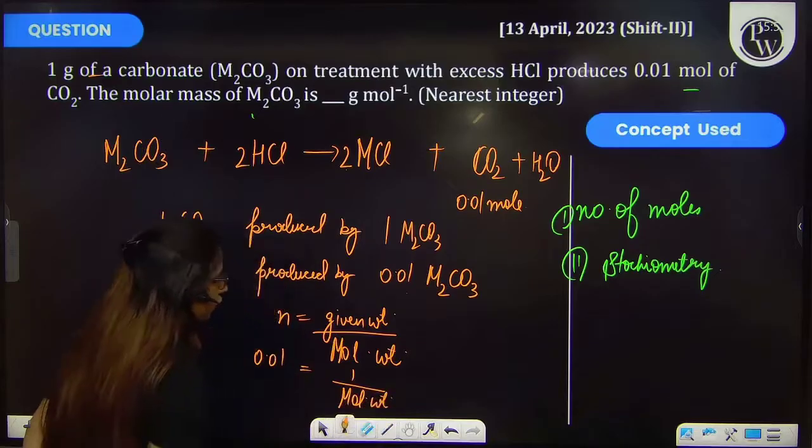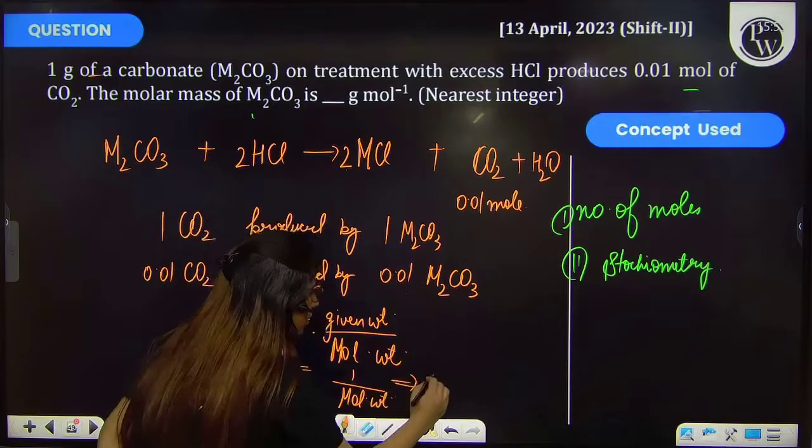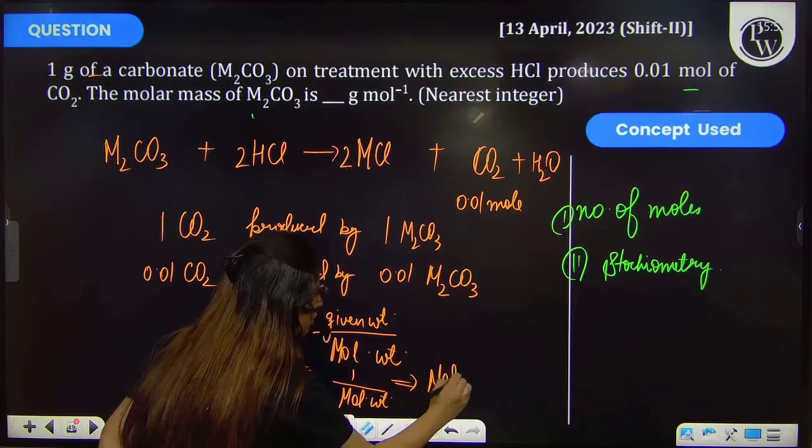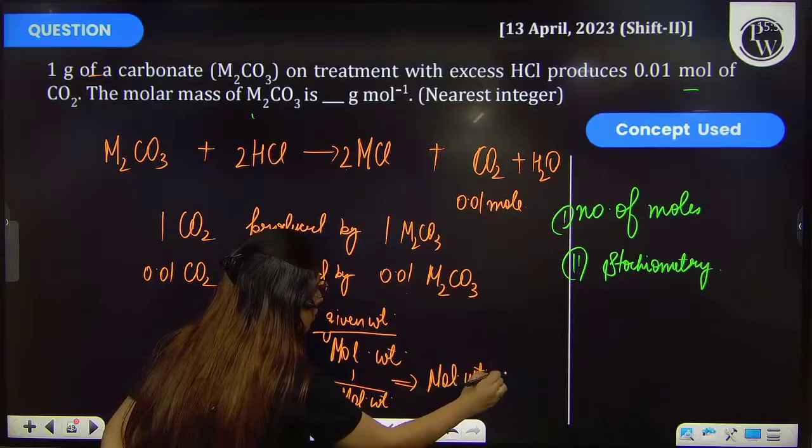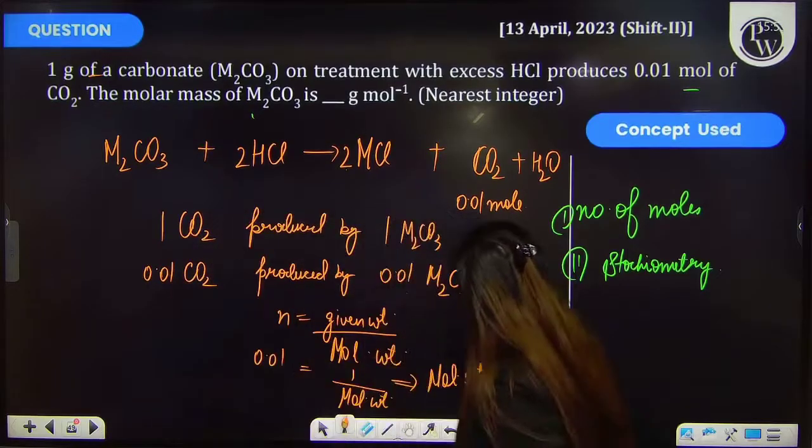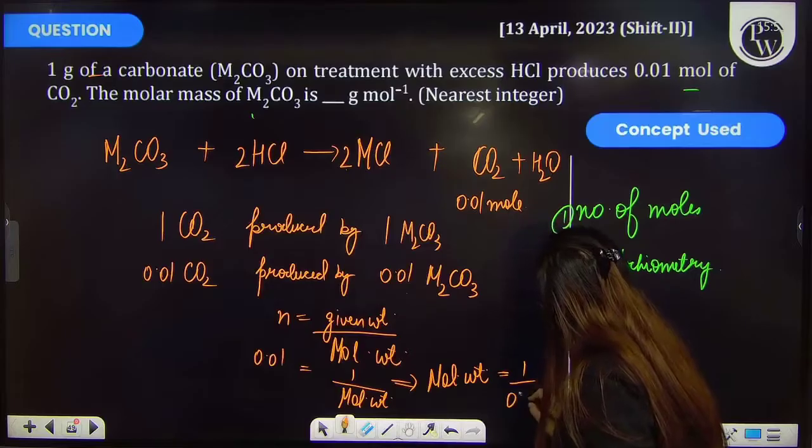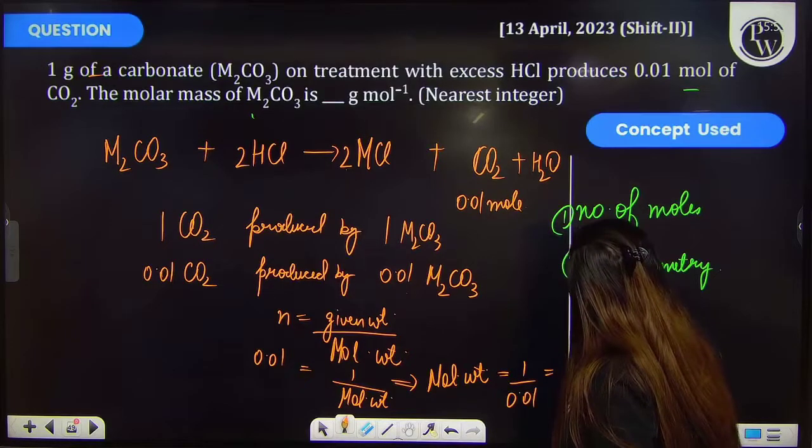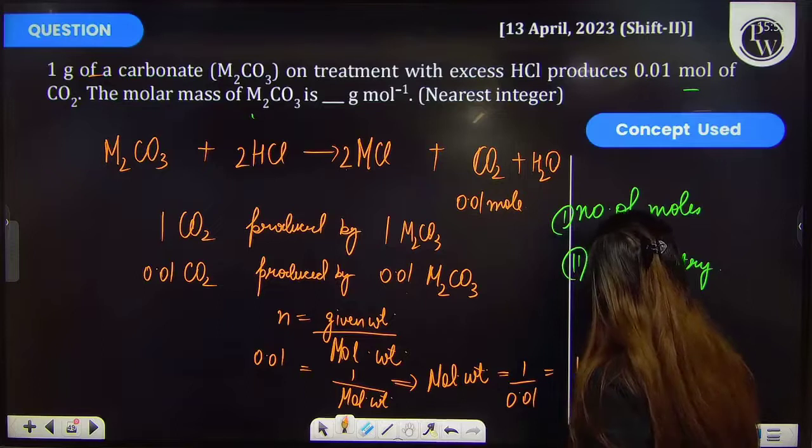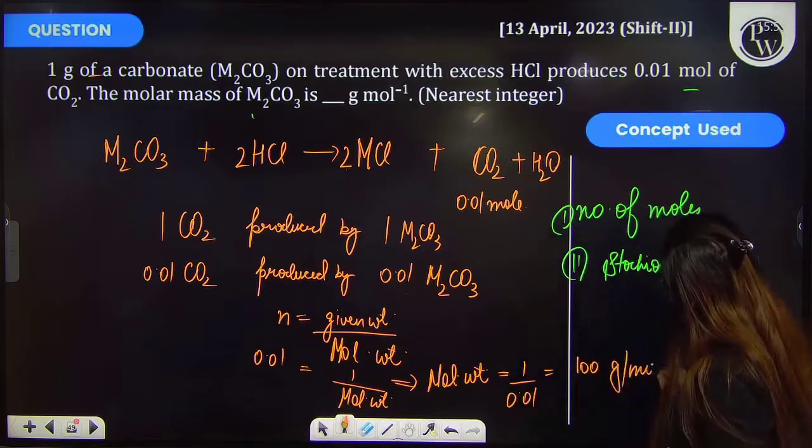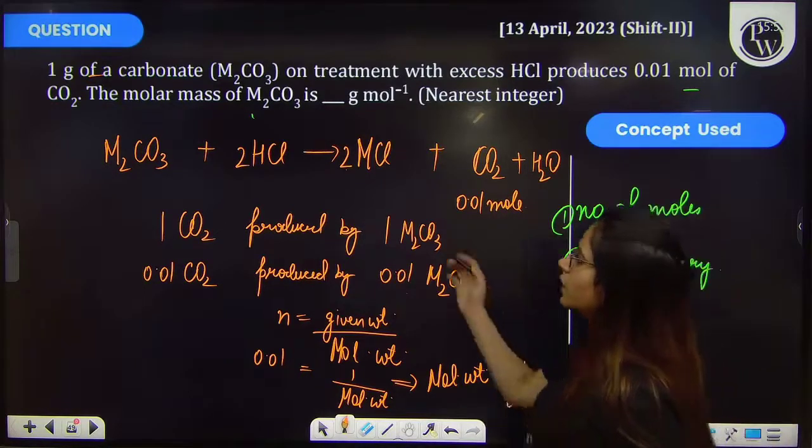So therefore molecular weight will be 1 upon 0.01, that means it will come out to be 100 gram per mol. So 100 is your answer.